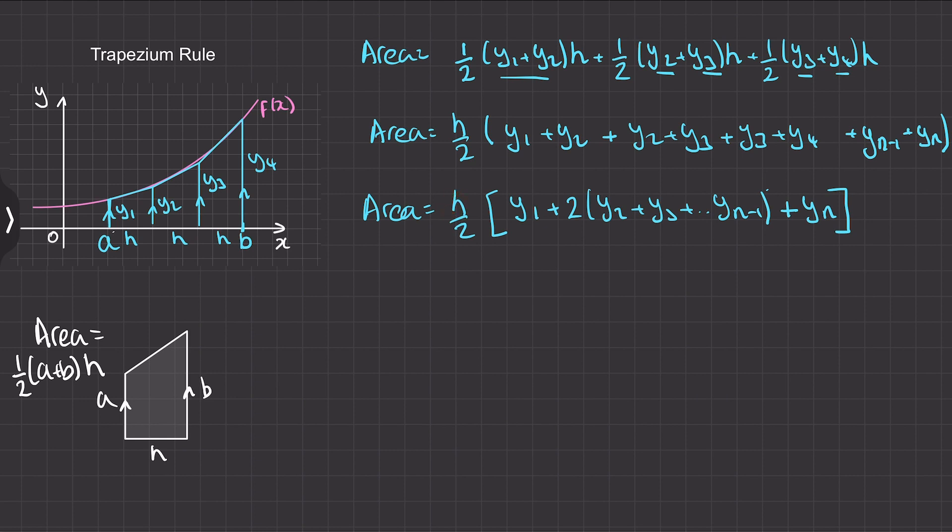So now we need to define what h and n are. So h will be the length of the trapezium which is the same as b minus a divided by the number of strips, so for instance b minus a divided by 3, and n is simply the number of strips or the number of trapezium. Okay, then this is the general formula for the trapezium rule of integration.